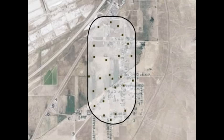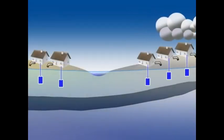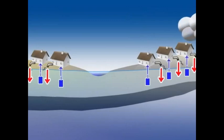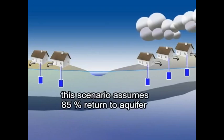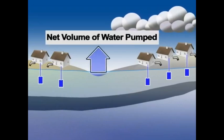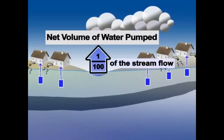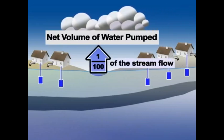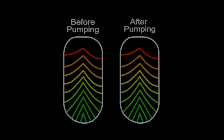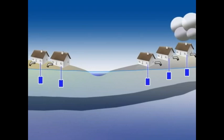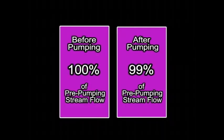Now consider a rural setting with homes spread throughout the basin at a low density of, for example, 100 people per square mile. In this case, they do not irrigate, but only use water for domestic purposes, and some of the water returns to the aquifer through wastewater disposal systems. Again, for this simulation, we assume that 85% of the water returns. In that case, the net volume of water pumped throughout the basin is only one one-hundredth of the water that leaves the basin as streamflow. There is little impact to the system. The streamflow past the stream gauge decreases slightly to 99% of the flow before development.